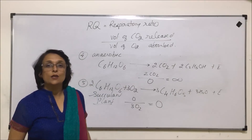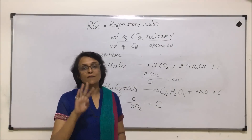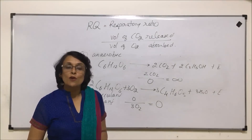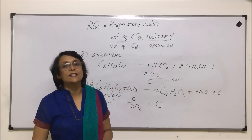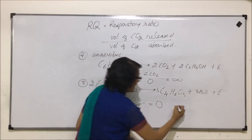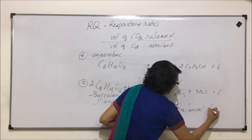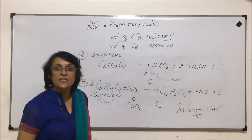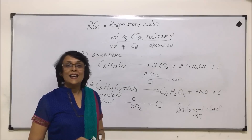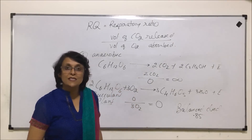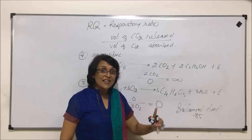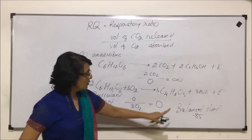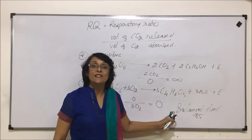If a question asks about the RQ of a balanced diet, a balanced diet has three main things: proteins, fats, and carbohydrates. Proteins and fats give RQ less than 1, and carbohydrates give RQ of 1. Taking the combined effect, it will be less than 1. The RQ of a balanced diet normally comes to 0.85, because two components — fat and protein — give RQ less than 1 and one component — carbohydrate — gives RQ of 1.